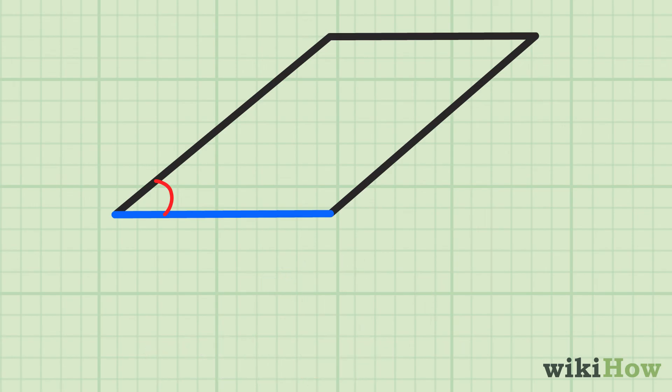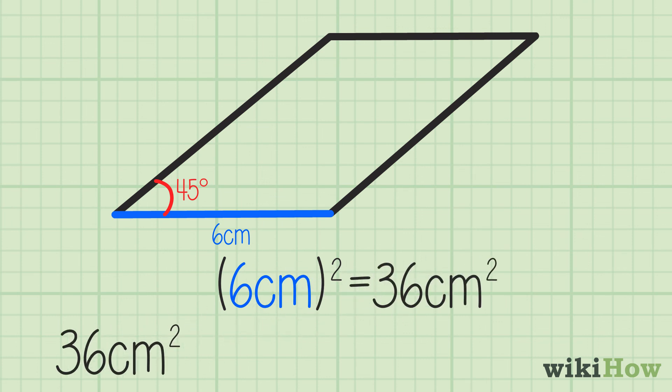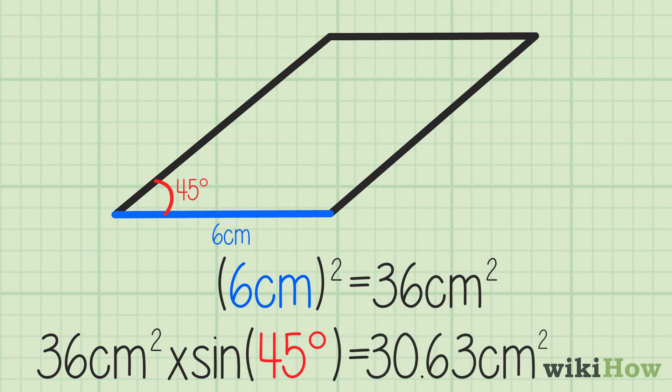For instance, if the rhombus has one side with a length of 6 centimeters, and you know it contains a 45-degree angle, the area would be 36 centimeters squared times sine 45 degrees, or approximately 30.63 centimeters squared.